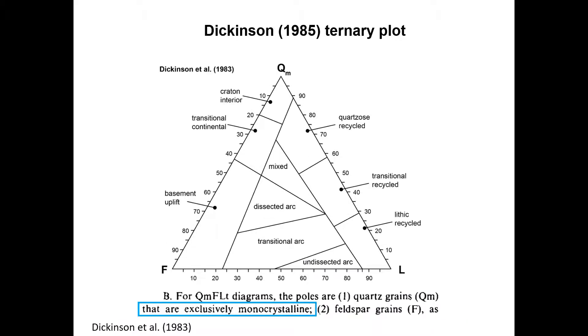In the Dickinson QM-FL plot, only monocrystalline quartz, or QM, is counted as Q. All polycrystalline quartz grains, including chert, are counted as L.